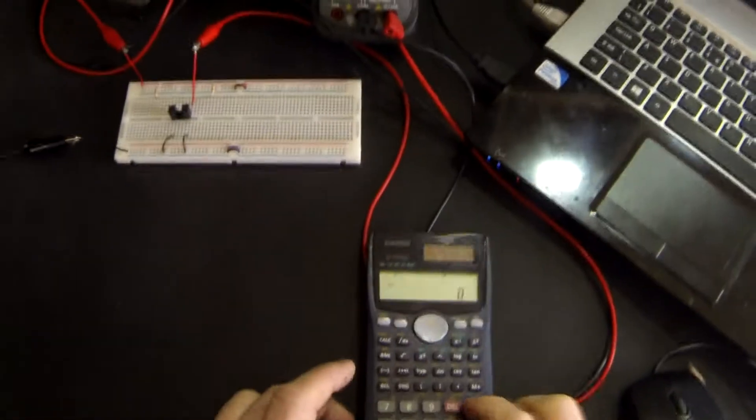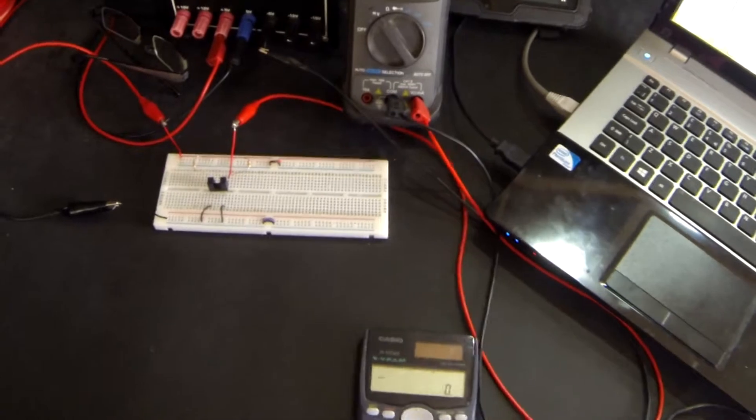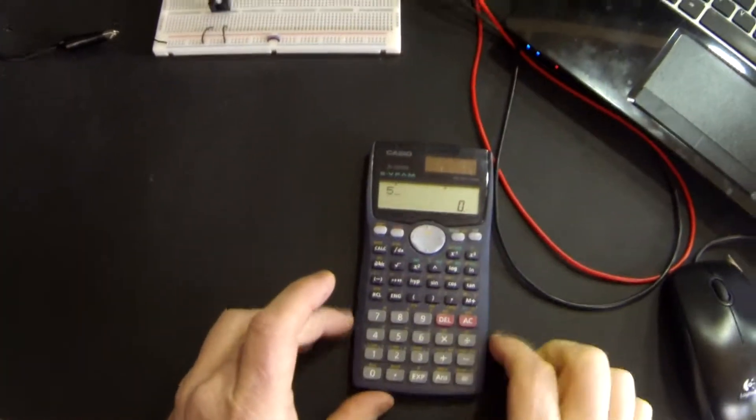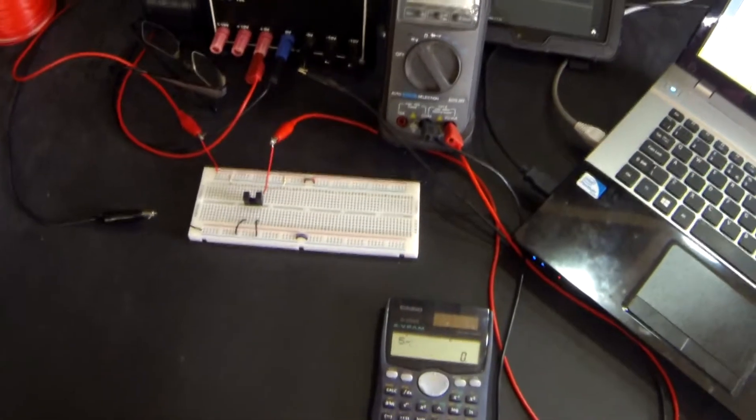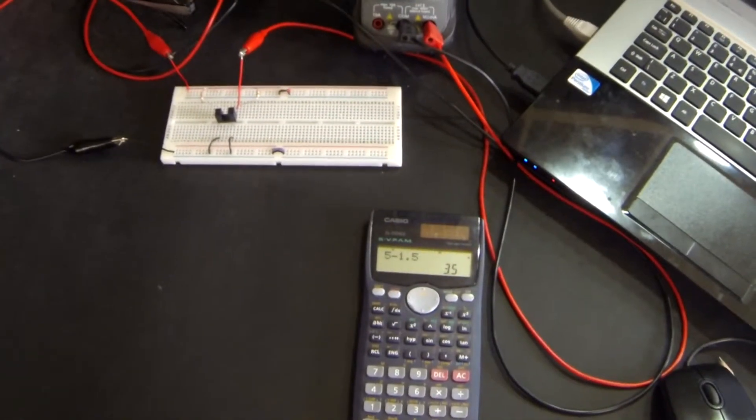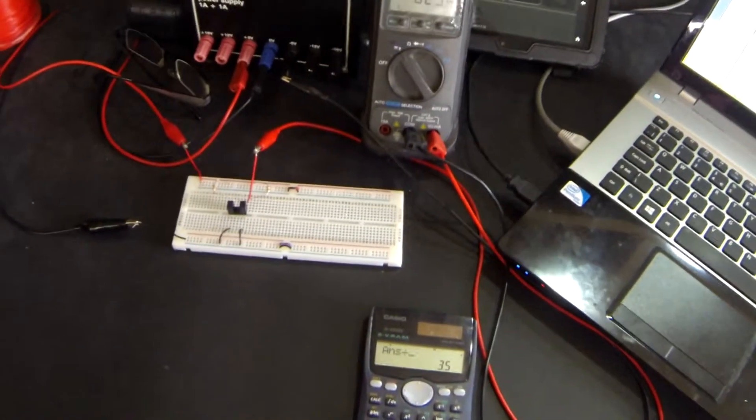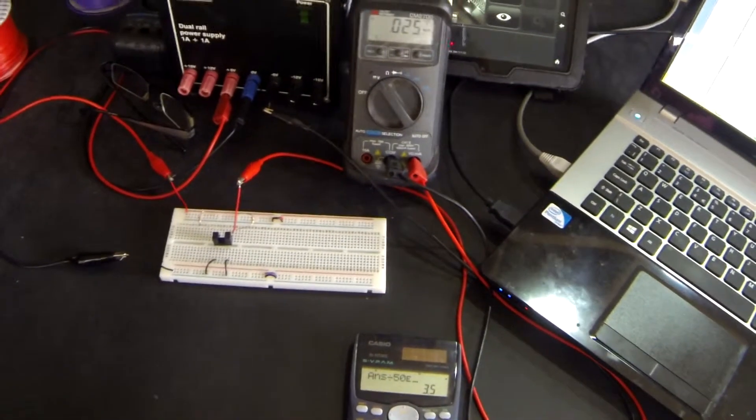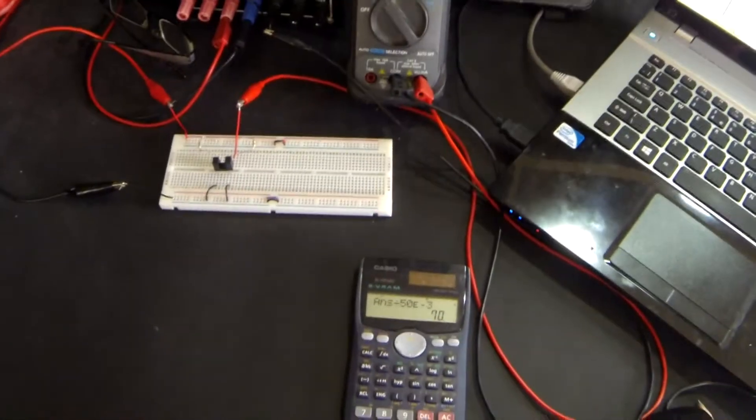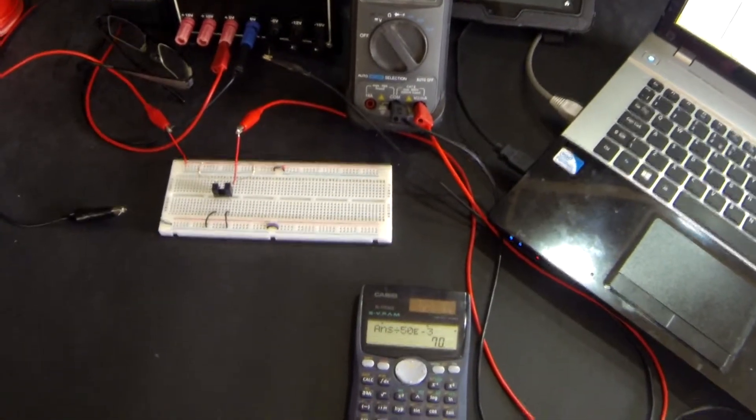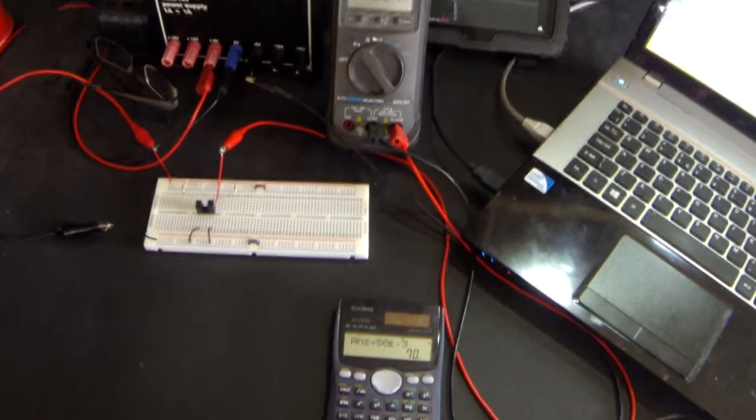So if we do a quick calculation, if we are using a 5 volt supply and we have a maximum voltage drop of 1.5, there's 3.5 volts across the resistor divided by that 50 milliamps through it, we need to be using a resistor value of 70. Well in my circuit I've decided to use 100 just to be safe so not too much current flows.